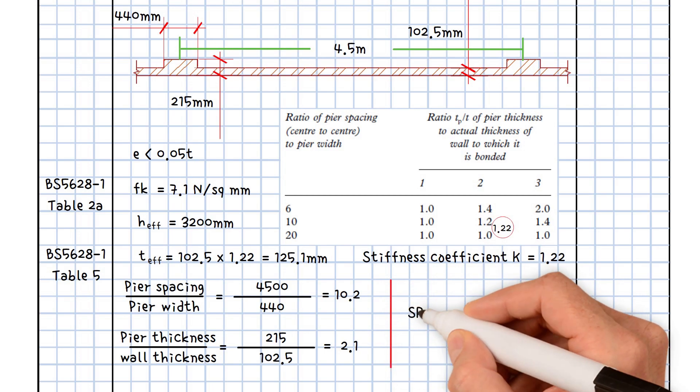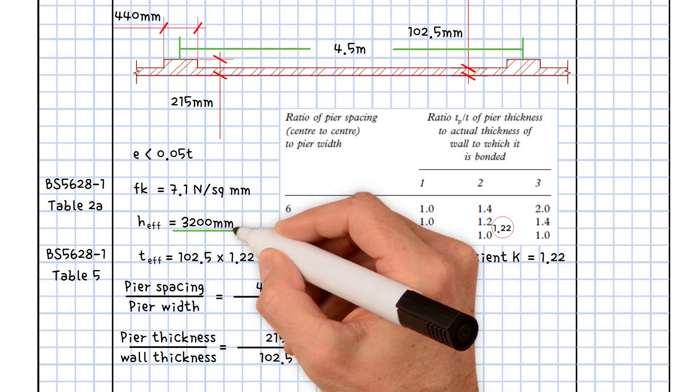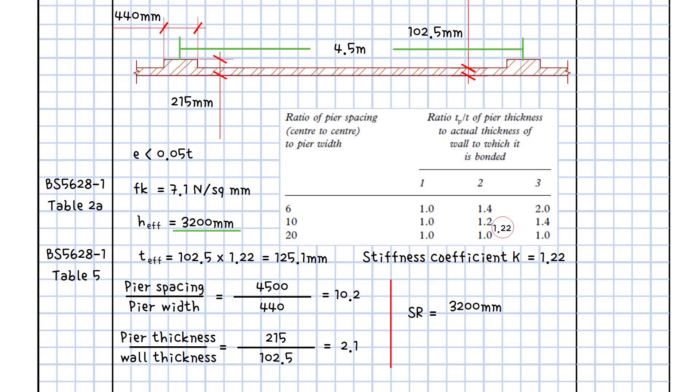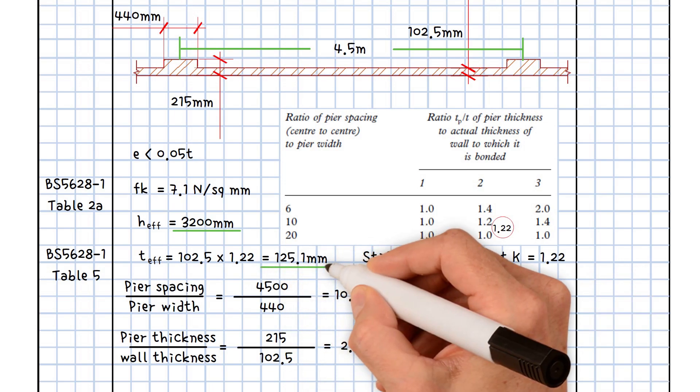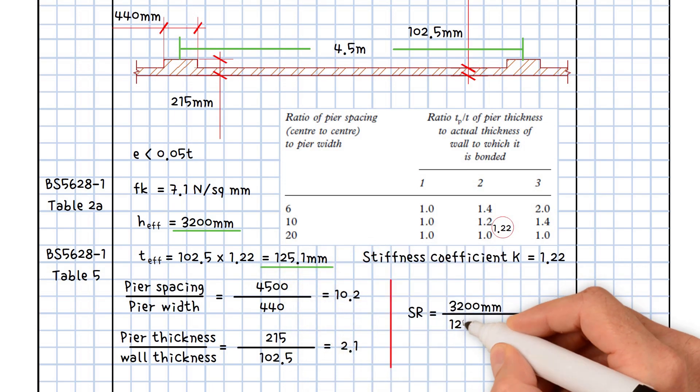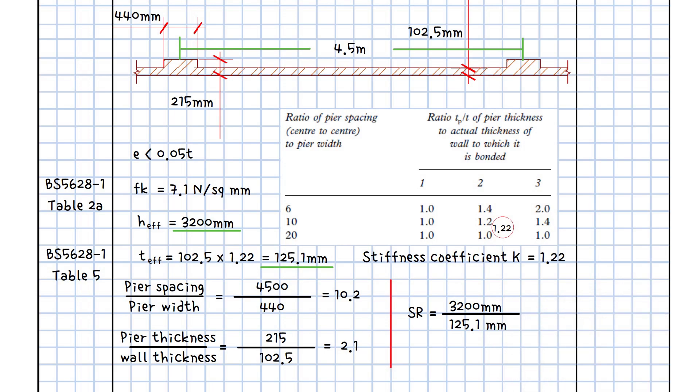Therefore, the slenderness ratio is equal to the actual height of 3200 millimeters divided by the effective wall thickness of 125.1 millimeters. This results in a value of 25.6, which is less than the allowable slenderness ratio of 27.